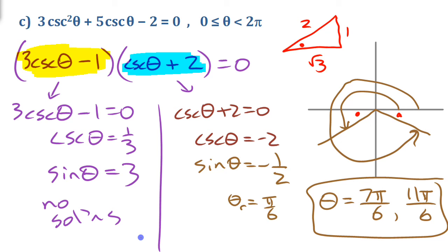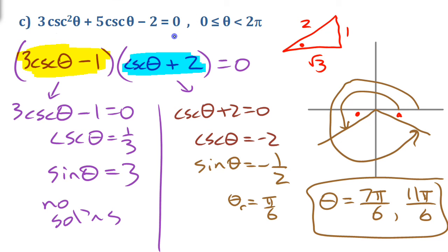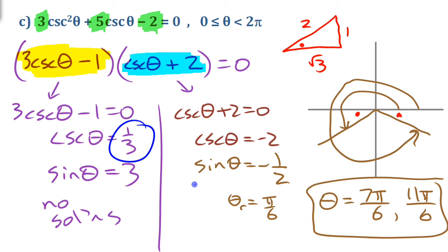So that's solving second degree trig equations using factoring. If you had a trig equation that was degree 2 and it didn't factor, that doesn't mean you're done — you'd use the quadratic formula, using a equals 3, b equals 5, c equals negative 2. You'd be solving for cosecant rather than x, and then follow the same process to find your angles.